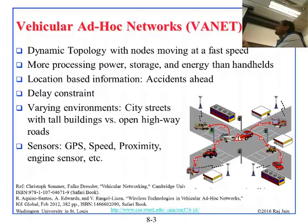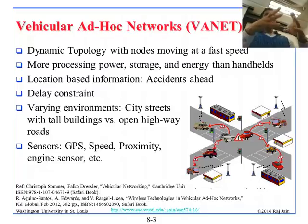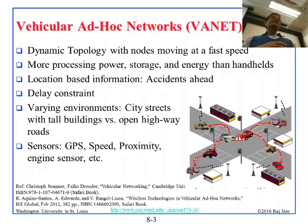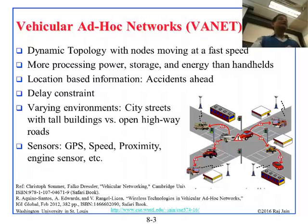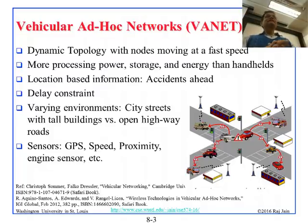VANETs have a dynamic topology with nodes moving at very fast speed. We are talking about high-speed mobility — one car moving at 60 miles per hour in one direction, another going 60 miles per hour in the other direction. Nobody stays in one place, so the topology changes constantly.